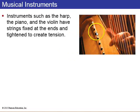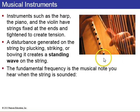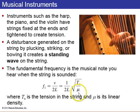So in stringed instruments like the harp or the piano, the ends are fixed and they create some tension, and a disturbance is generated by plucking the string to create a standing wave. And the fundamental frequency on a stringed instrument is v over 2 l, where v is this square root of the tension divided by mu. So that's the speed of the waves on the string, and here's the length of the string. So you can vary the tension, you can vary the string density, or you can vary the length of the string. All of these will create different notes or different frequencies.